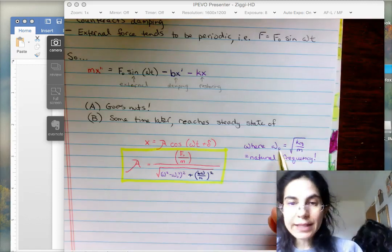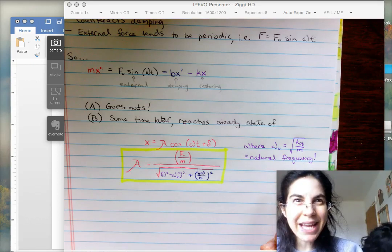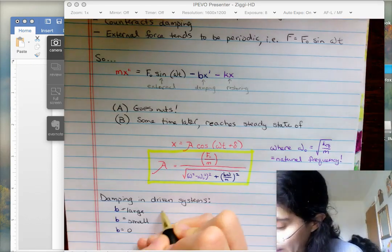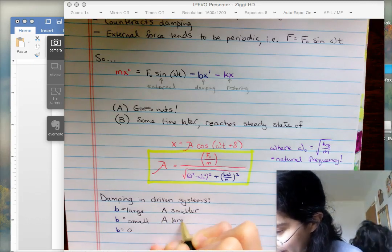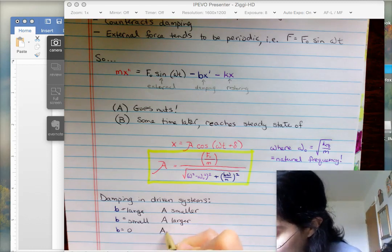The omega naught is the square root of the equivalent k over m, a.k.a. the natural frequency of the system. In big picture, the amplitude is smaller. When b is small, the amplitude is larger. And when b is zero, the amplitude is the largest possible.